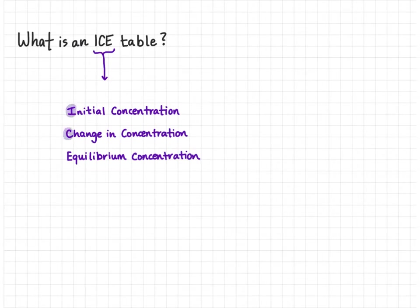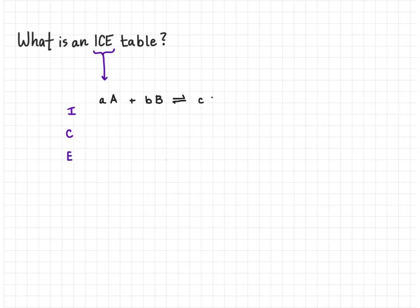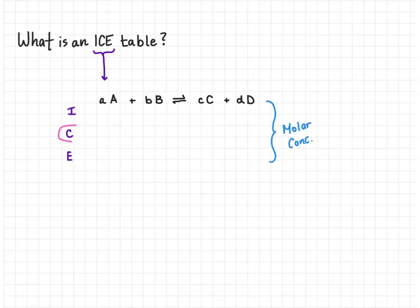I, C, and E are going to be really important in all of our ICE tables that we write. An ICE table has the general form of an equation at the top. The small letters are the coefficients and the capital letters are the chemical species. When we have I, C, and E down the side, we put our molar concentrations of the species and the changes in equilibrium concentrations in this table.